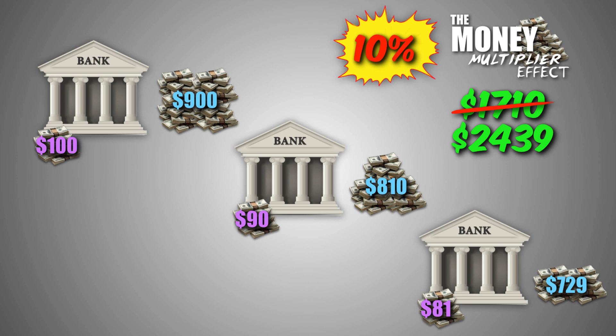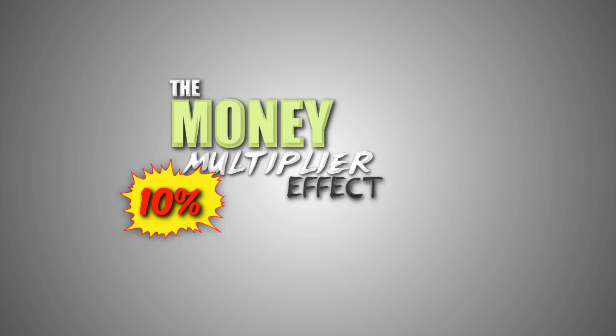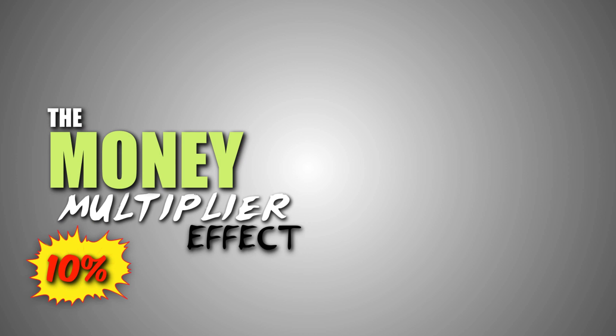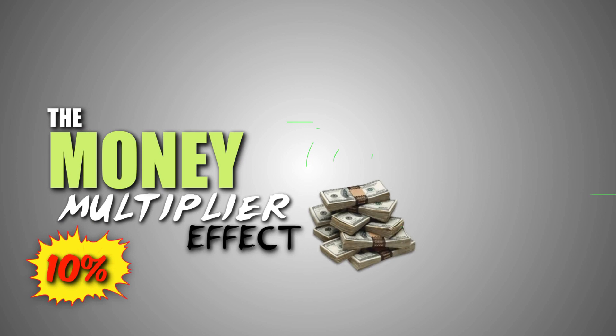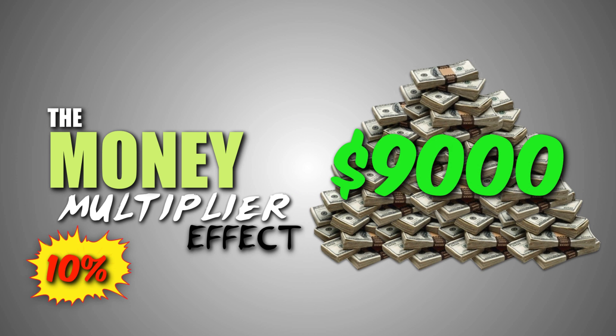If we continued the process until no additional loans could be created and banks could lend out no more, we would find that the initial $1,000 demand deposit initiated a multiplier effect that generated $9,000 in new money and loanable funds throughout the economy.